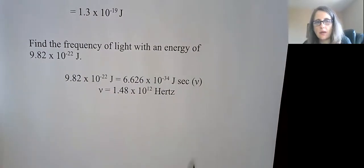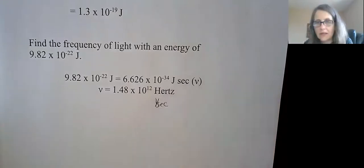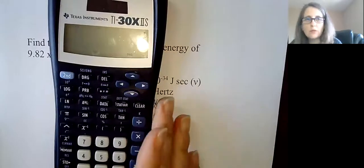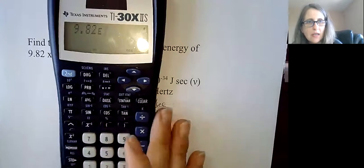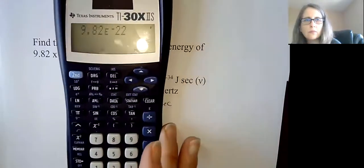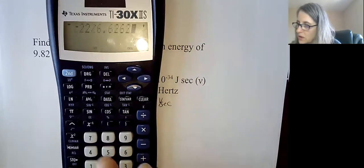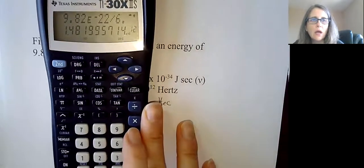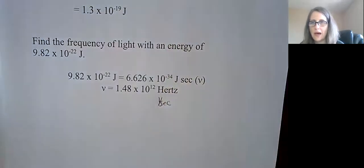You should get 1.48, three sig figs there, times 10 to the 12th hertz. It could be inverse seconds, same exact thing. What you do in your calculator is take 9.82, so that's your energy e, to the negative 22, and divide it by Planck's constant. So 6.6262, second function e, negative 34. And you will get essentially the 1.48 times 10 to the 12th, which is what we got in this problem.